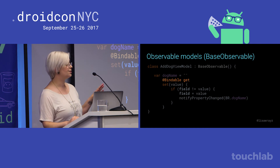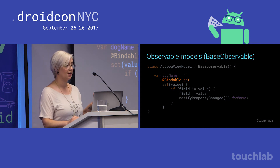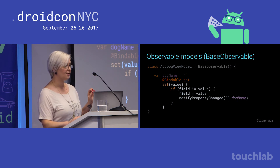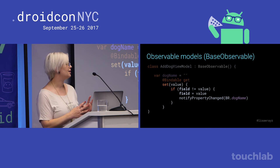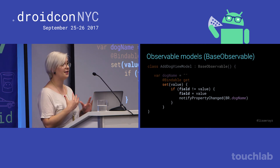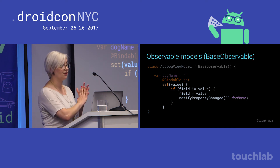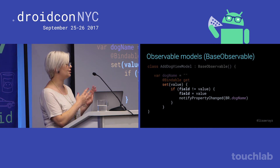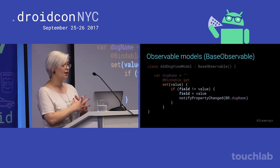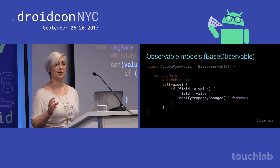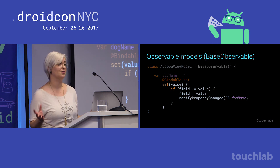You're going to annotate your bound fields with @Bindable, and that lets data binding generate BR properties for them — those are kind of like R values, but for data binding. You can use those to notify the property registry. BR stands for binding registry, but don't quote me on that. To notify in the setter in Kotlin, you'll have to implement a custom setter. In Java this isn't terrible, but I'll admit in Kotlin the custom setter syntax makes this kind of gross.